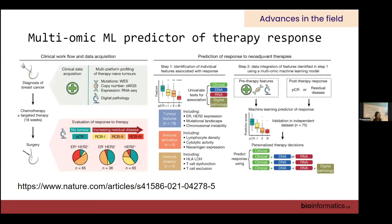Here's another cool example — a multiomics predictor for breast cancer treatment. They built it using mutations, copy numbers, RNA-seq expression, and digital pathology. They started with univariate tests for drug associations — exactly what we've been covering in module three — then once they identified key features, they built a more complex model by combining machine learning models. They validated in an external dataset with really strong results. A successful application of starting with univariate analysis and building the model from there.